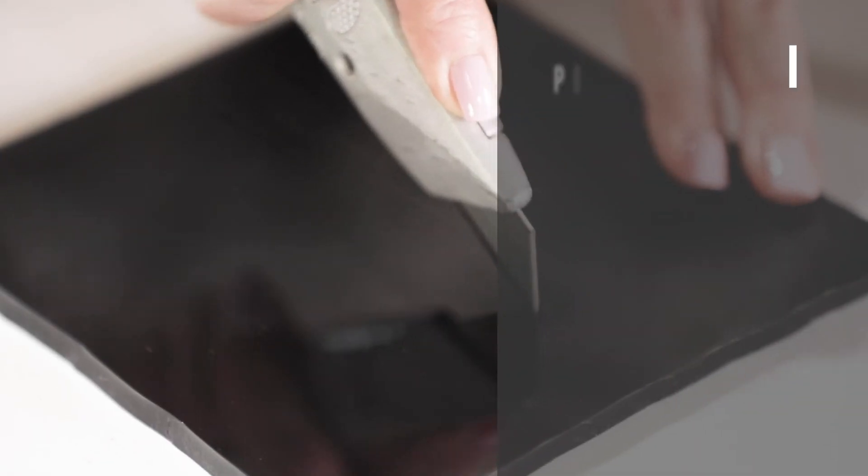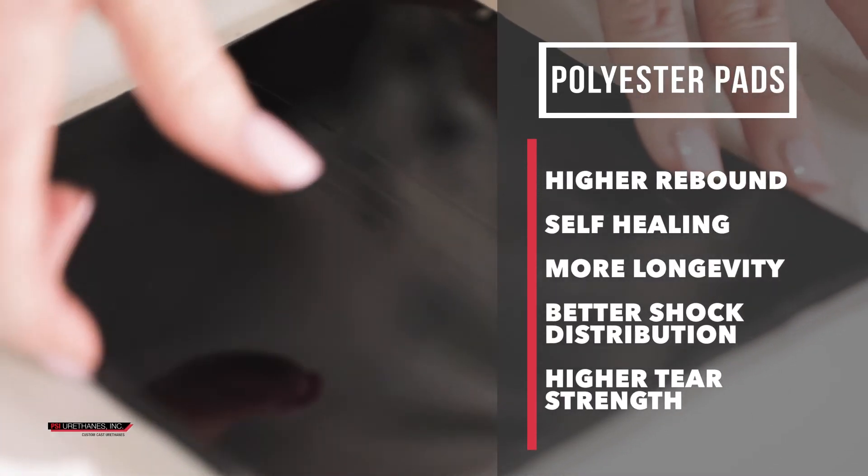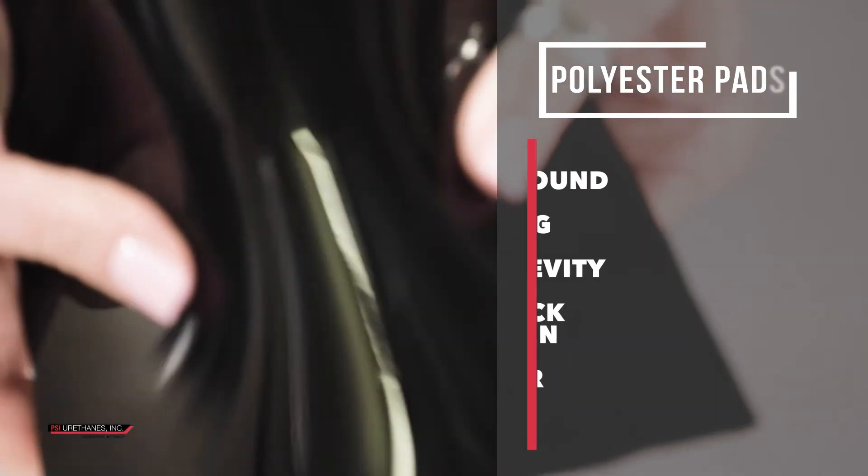In metal forming applications, you always want to integrate with the polyester for the tear strength and the rebound. The polyester works the best, anywhere from 68 durometer to 85 durometer.